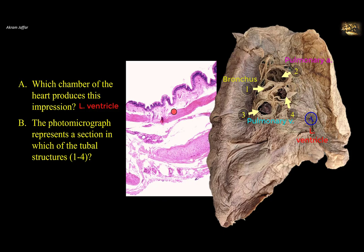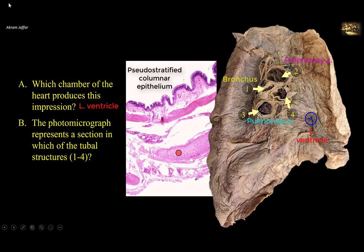The wall of the tubular structure in the photomicrograph is not that of a blood vessel. The epithelium is not simple squamous endothelium as in blood vessels, but pseudo-stratified columnar ciliated epithelium — a respiratory epithelium. Deep to the epithelium, in addition to smooth muscle, there is cartilage, which is not present in blood vessel walls, and mucus-secreting glands. These features indicate the section is from the bronchial tree — specifically a bronchus, matching structure one.